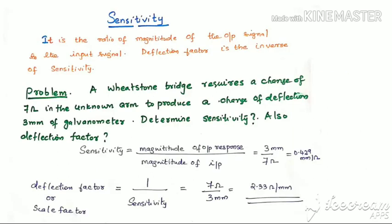First let us see some terms we will be encountering in measurement systems. The first one is sensitivity. It is the ratio of magnitude of output signal to the input signal. Deflection factor is the inverse of sensitivity.